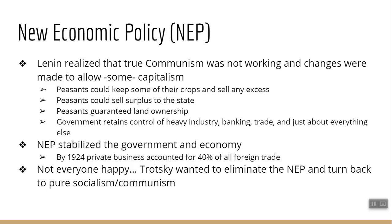Not everyone was happy about the NEP. Hardline communists who disagreed with any capitalism started speaking up. Leon Trotsky was the most famous — he wanted to eliminate the NEP entirely and pursue pure socialism and communism, arguing it just needed more time. Trotsky had arguments with both Lenin and with a man named Joseph Stalin. In the end, Leon Trotsky would lose his life over it.